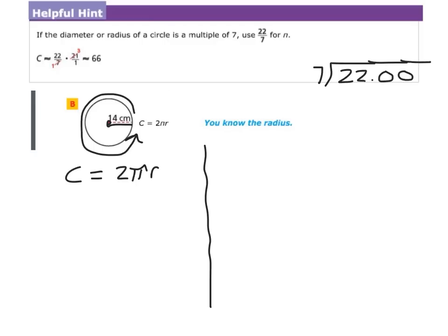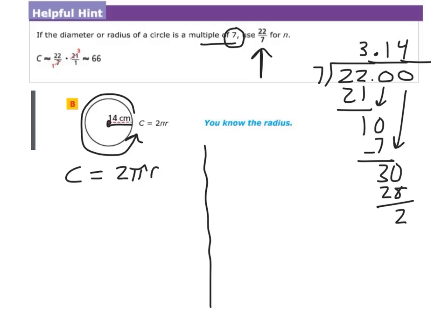Another way to solve this one, because 14 is a radius and it's a multiple of 7, we could use another number in place of pi. 22 over 7 is equivalent to pi. Let's just take a look at that. 22 divided by 7. 7 goes into 22 three times. 3 times 7 is 21. The remainder is 1. Bring up the decimal, bring down the 0. 7 goes into 10 once. 10 minus 7 is 3. Bring down the 0. 7 goes into 30 four times. The remainder is 2. I could keep this going, and I'd get a number that's pretty close to pi. So I can use 22 over 7 as well in place of pi.